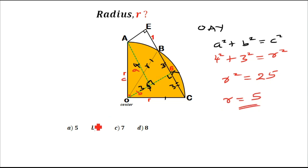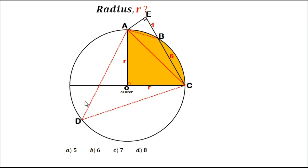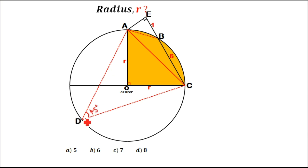Taking the square root of both sides gives the radius R equals 5. That is the simplest trick for determining the radius. Now for the usual method, you complete the quadrant into a full circle. The arc ABC subtends an angle of 90 degrees at the center, and by the inscribed angle theorem the same arc subtends half that angle — 45 degrees — at the circumference point D.